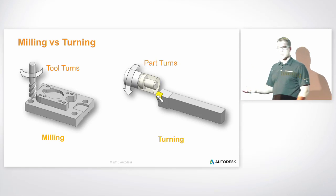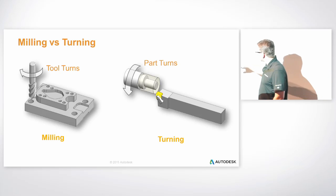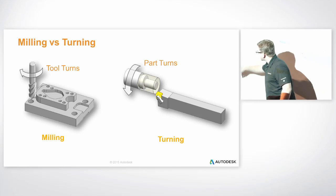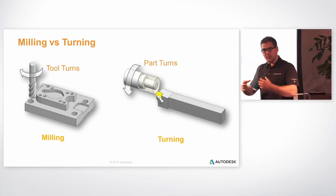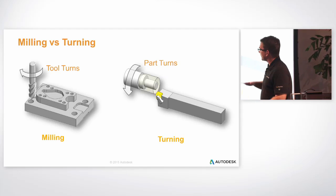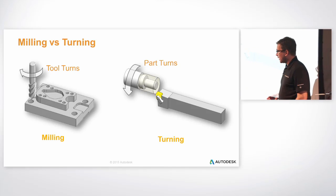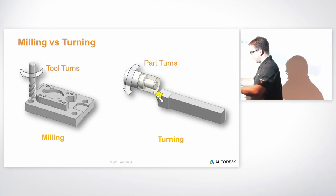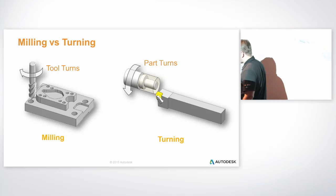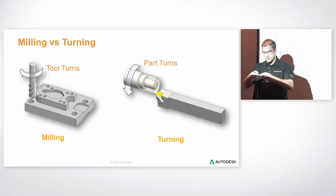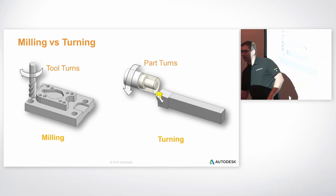You need to design parts with radii in corners so a tool can get in there, though there are tricks you can use to relieve pockets if you need something sharp. On the other hand, turning is where you spin the part and the tool is relatively stationary as it runs through the part — so you end up with round parts. The part spins and the tool cuts the stock. That's the key difference between milling and turning.